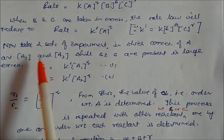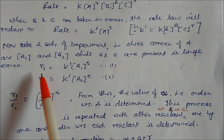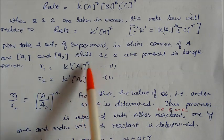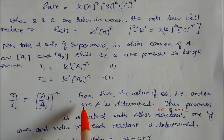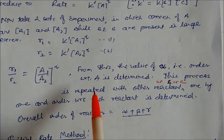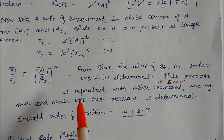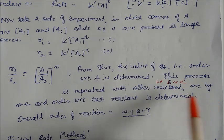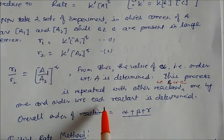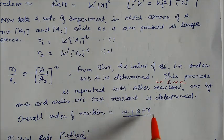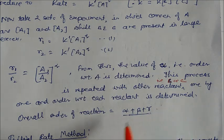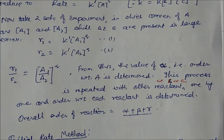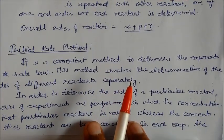Consider a reaction with three reactants M1, M2, M3 and rate law: rate equals k[A]^α[B]^β[C]^γ. If B and C are in large excess, the rate reduces to rate equals k'[A]^α, where k' is an effective constant. Taking two experiments with concentrations a1 and a2 while B and C are in excess gives r1/r2 equals (a1/a2)^α, from which α is determined. The process is repeated for B and C to find β and γ, giving overall order α plus β plus γ.